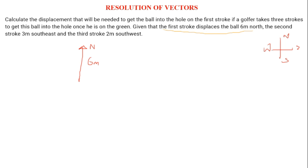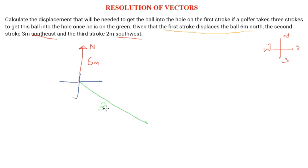The second stroke is three meters southeast — so that means in between south and east. In my video where I talked about resolution of vectors, I already described what southeast means and several things pertaining to that. You can check that video in the suggested icon. So the second stroke is three meters southeast.